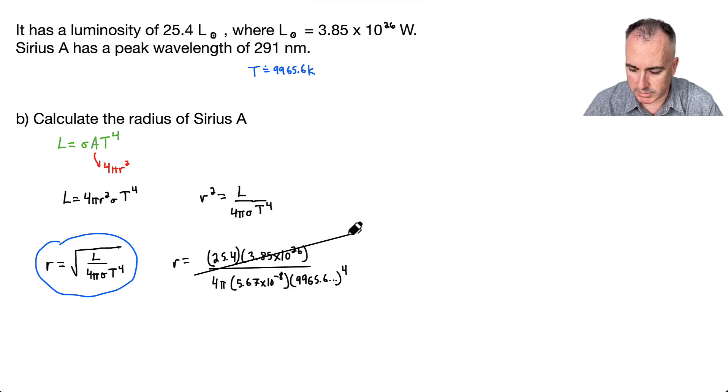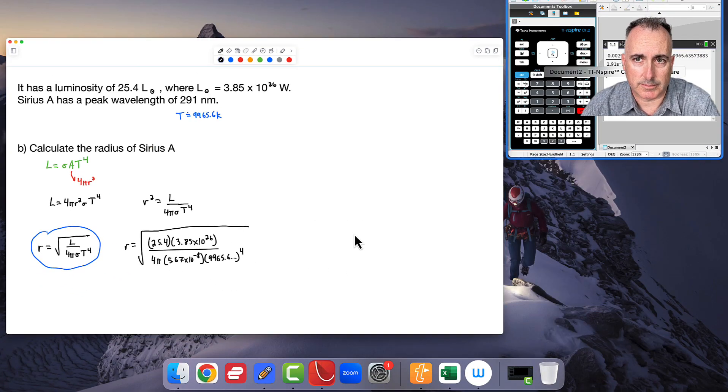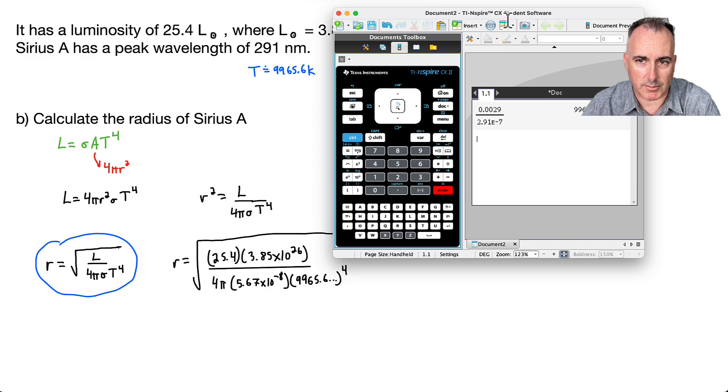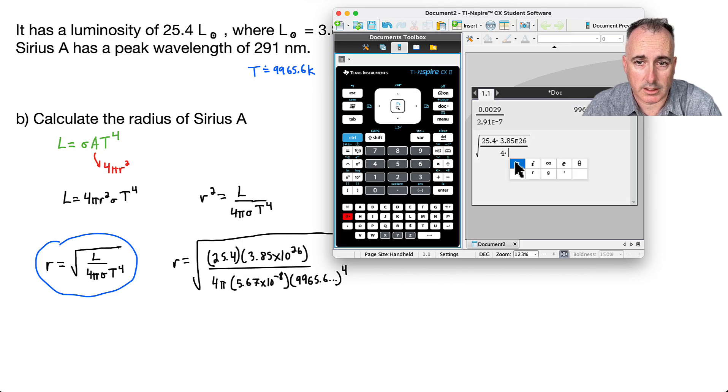So although it seems like kind of a mess, we can do this on a calculator. So I'll just get on my calculator and do this. I'm going to save that answer. I'm going to say, first of all, I want a square root, and then I want a fraction. And then I'm going to say 25.4 times 3.85 × 10²⁶. On the bottom I'll say 4 times π times 5.67 × 10⁻⁸. And all that's going to be times, I'll do it in brackets, and I'll say answer to the power of 4. All right, so there we go.